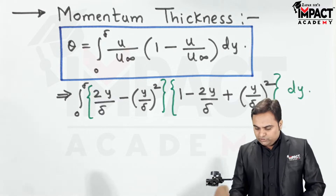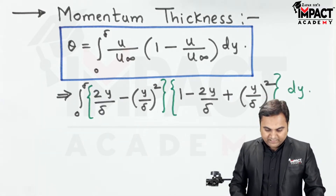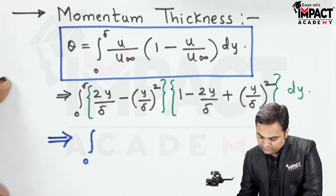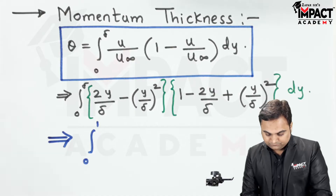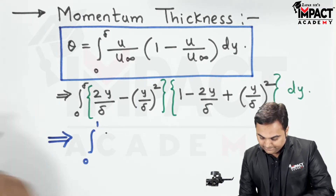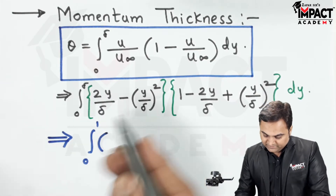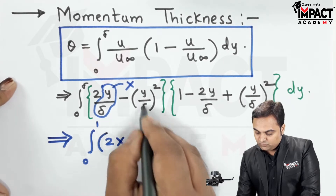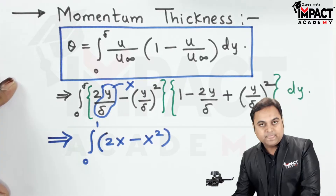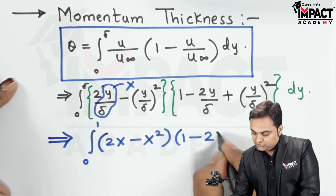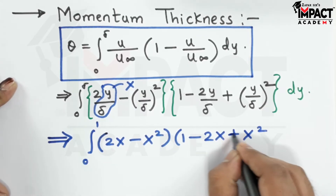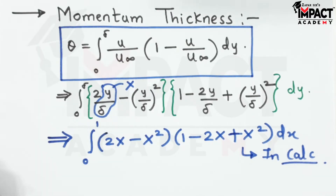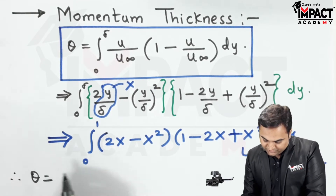Using the shortcut, replace y/δ with x and change limits to 0 to 1. The integrand becomes (2x − x²)(1 − 2x + x²) dx. This term is entered into the calculator to get the momentum thickness theta.